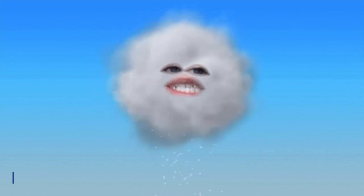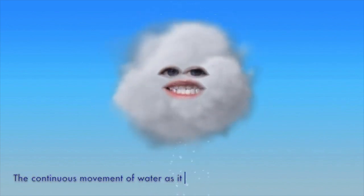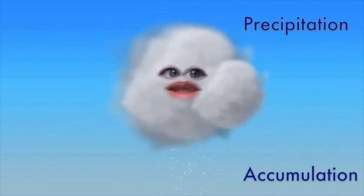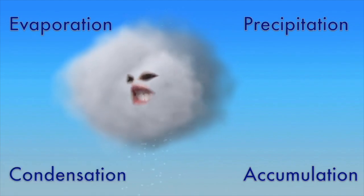The water cycle, simply put, is the continuous movement of water as it changes and travels around our earth. It has four main stages: precipitation, accumulation, evaporation, and condensation.